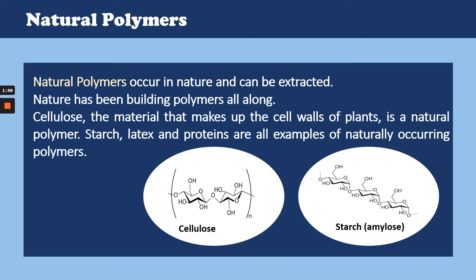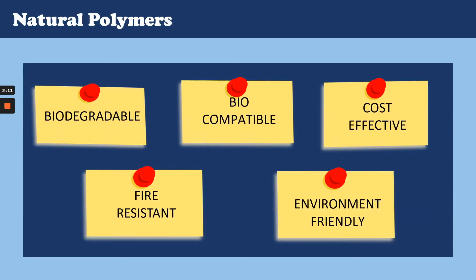Natural polymers are those that occur in nature and can be extracted. Nature has been building polymers all along. Cellulose, the material that makes up the cell walls of plants, is a natural polymer. Silk, wool, DNA, cellulose and proteins are all examples of polymers. Biodegradable, biocompatible, cost effective, environmentally friendly — these are some of the attributes of natural polymers. Natural fibers are resistant to fire, although most synthetic polymers melt easily.